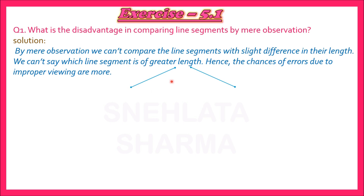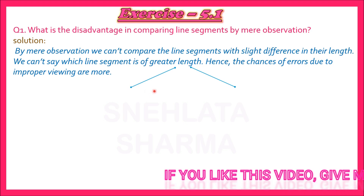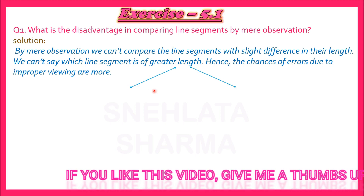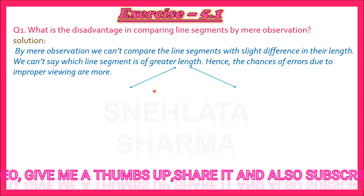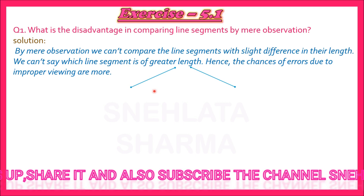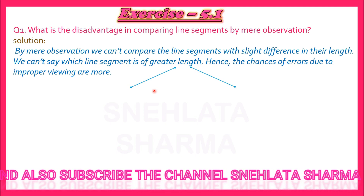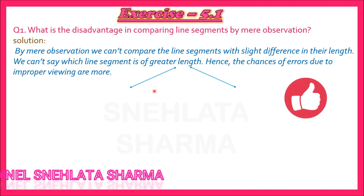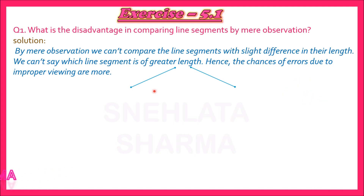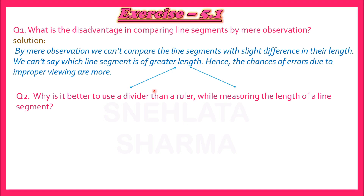Aap dekhiye, yahan par maine do line segments liye hain jinki length almost equal hai. Ab agar in line segments ko main sirf observe karke compare karti hoon to mujhe ye dono equal dikhai denge. But actual mein measure karne par pata chalega ki left wala line segment right wale ke comparatively thoda sa chhota hai. So by mere observation we can't compare the line segments with slight difference in their length. Agar difference in length zyada ho to hum observe karke bhi compare kar sakte hain, but agar almost equal hain to nahi bata sakte.